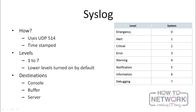So how does syslog work? If you're using a syslog server, IOS communicates with the syslog server on UDP port 514. By default, the log messages are usually timestamped so you actually know the time when things happen. There are eight syslog levels from zero to seven, where zero is an emergency and one is alert, all the way to seven which is debugging.